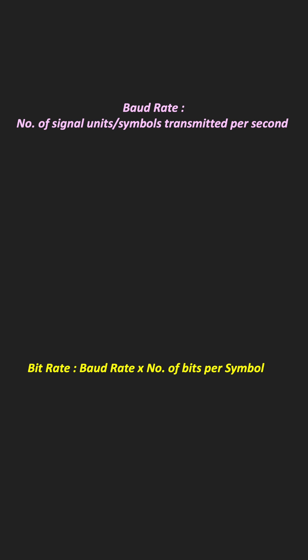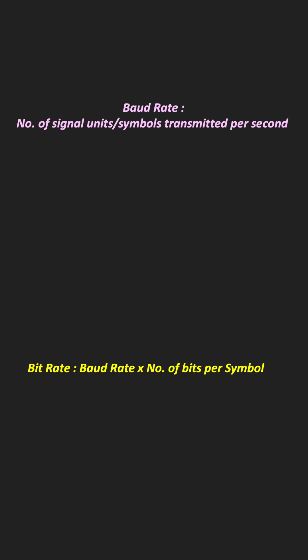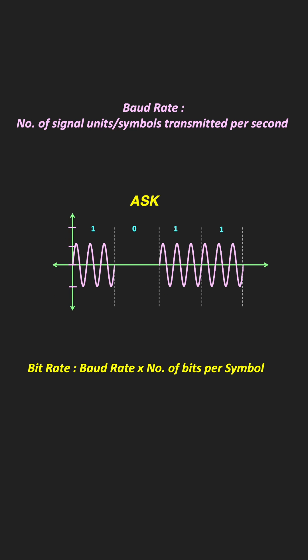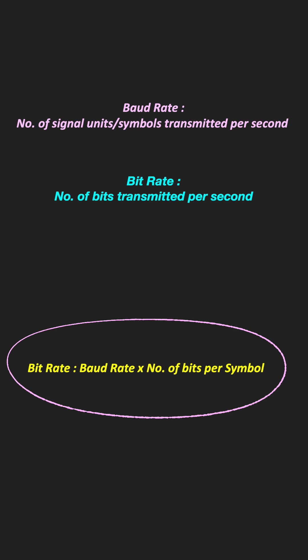For example, in quadrature amplitude modulation, each symbol carries two bits of information. So for a baud rate of 1000 symbols per second, the bit rate would be equal to 2000 bps. But on the other hand, if the modulation technique is amplitude shift keying, then the bit rate would be the same as the baud rate. So in short, the bit rate defines the number of bits transmitted per second, while the baud rate defines the number of symbols transmitted per second, and this is the general relation between the two.